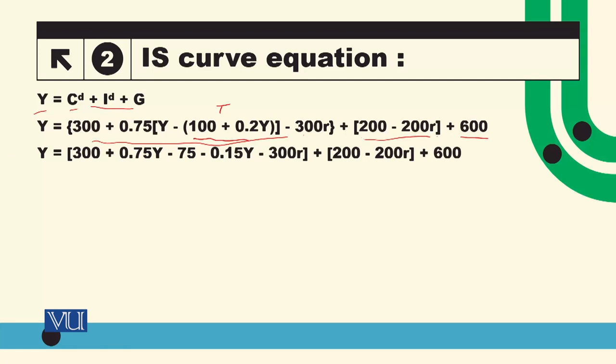So now solve. We have 0.75 multiplied by Y, 100 multiplied by 0.75, 0.2 multiplied. In the next step we have Y: 1 minus 0.75 minus 0.15 in Y. We have collected this, this is 0.4Y.